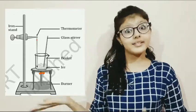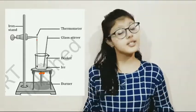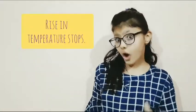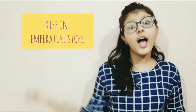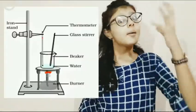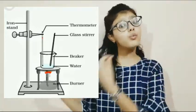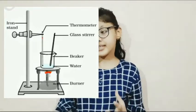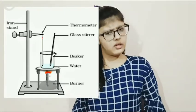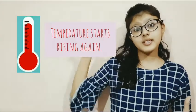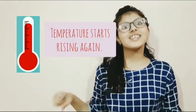What you will observe is that the temperature on the thermometer continuously increases, and at a certain point it stops. At that point, the ice begins to convert into water. While the ice is converting into water, the temperature is not rising. But after some time, the water begins bubbling again and the thermometer's temperature, which was constant, starts rising again.